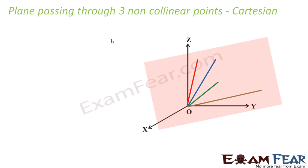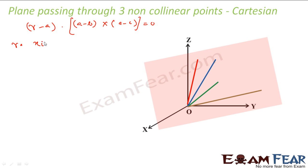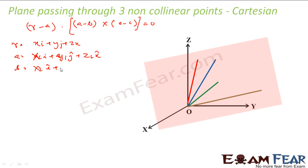Now let us see the same thing in Cartesian form. We use the same formula: R minus A dot (A minus B cross A minus C) equals 0. So let R be Xi + Yj + Zk (unknown). Let A be (X1, Y1, Z1), B be (X2, Y2, Z2), and C be (X3, Y3, Z3) — these are known points; X, Y, Z are variables.